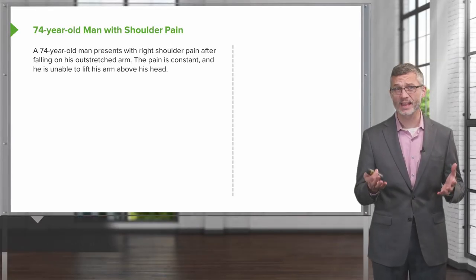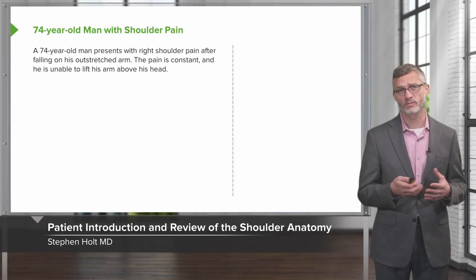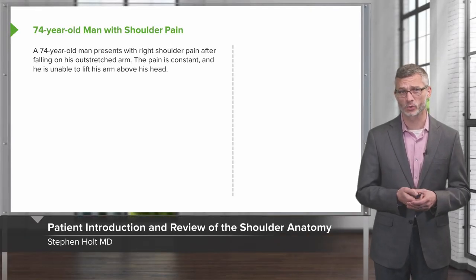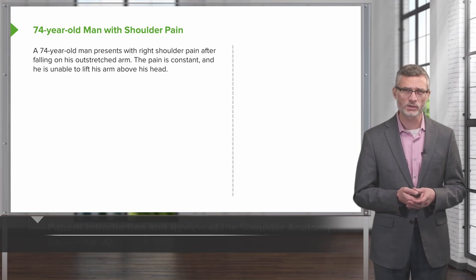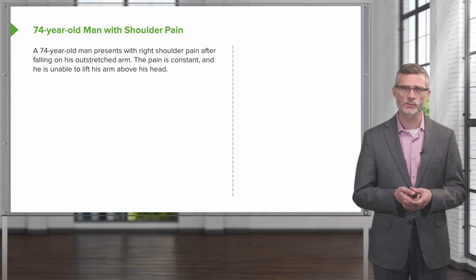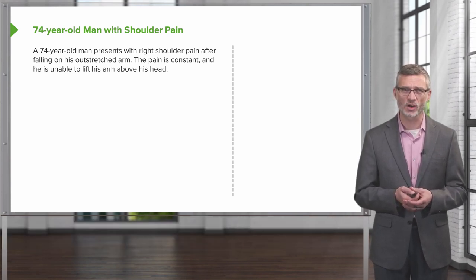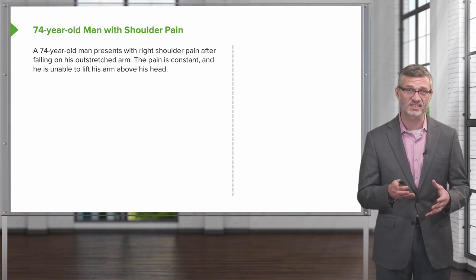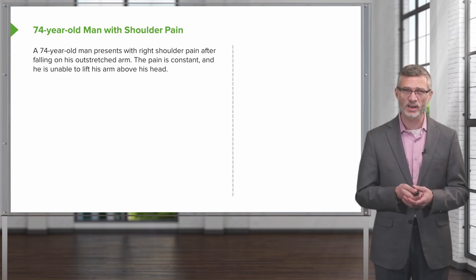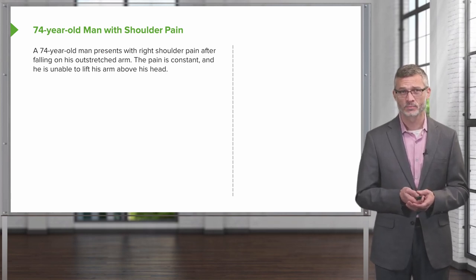Let's look at a case of a patient with shoulder pain. This is a 74-year-old man presenting with right shoulder pain after falling on his outstretched arm. The pain is constant and he is unable to lift his arm above his head.